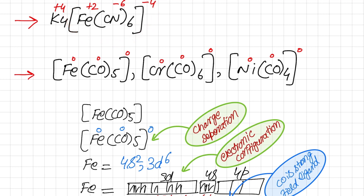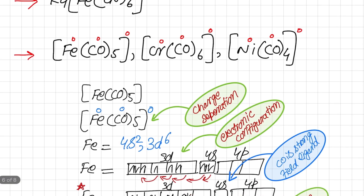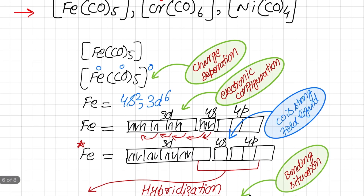The bonding between metal and ligand is controlled by the charge on the metal. If the metal has a greater charge and similarly the ligand has a greater charge, then there will be stability of the coordination complex.